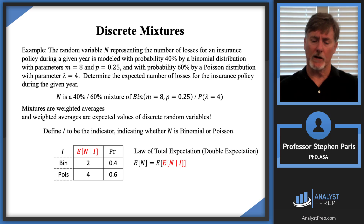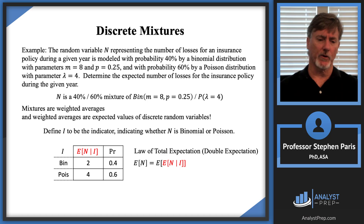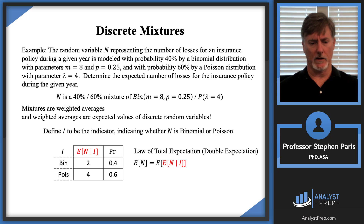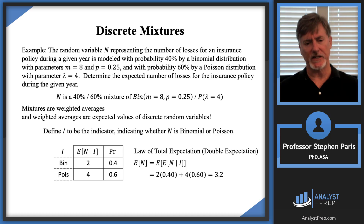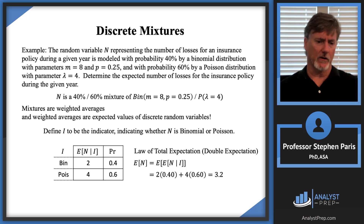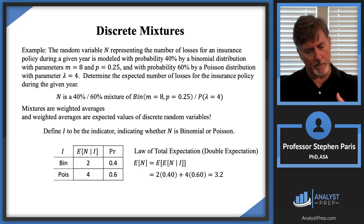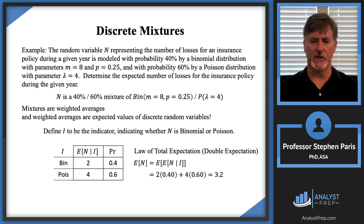What I'm doing here — even in the informal solution — is using the law of total expectation, or the double expectation theorem. I'm computing the expected value of N by taking the expected value of the random variable defined as E[N | I]. When you take the expected value of that random variable, you get the weighted average of 3.2. So mathematically, what's going on behind the scenes is actually the law of total expectation.